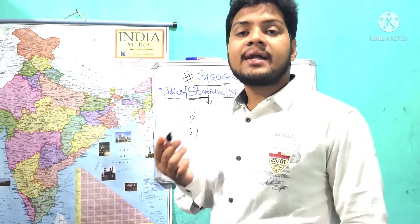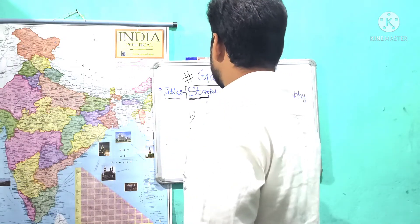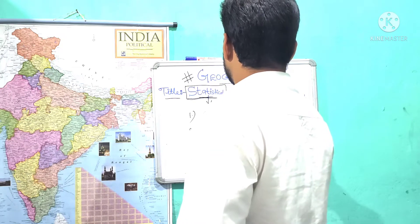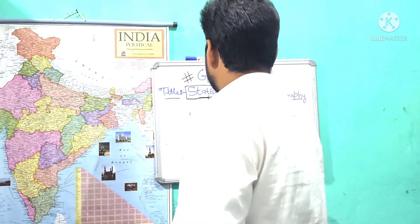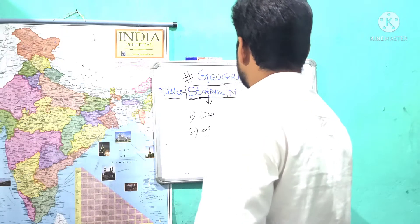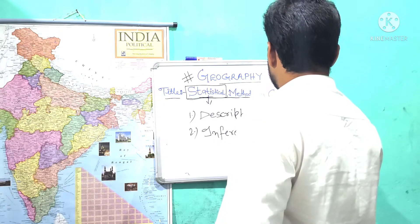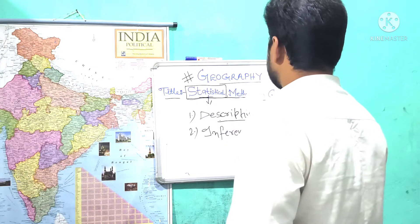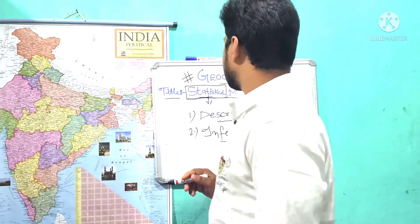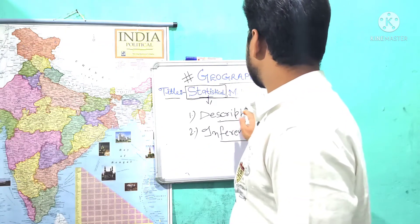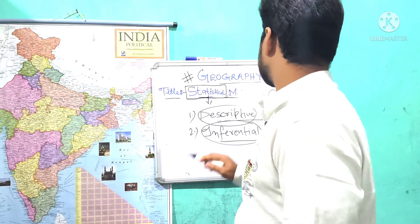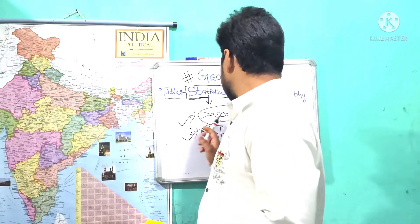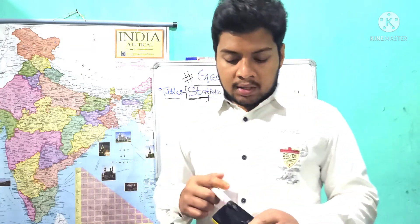The two branches are descriptive statistics and inferential statistics. We will now see the meaning of each — which types of statistics come under descriptive and which come under inferential. Descriptive statistics deals with organizing and describing a sample or population.